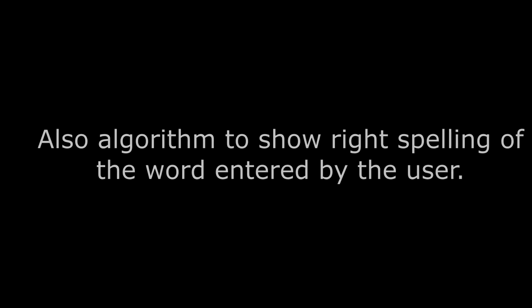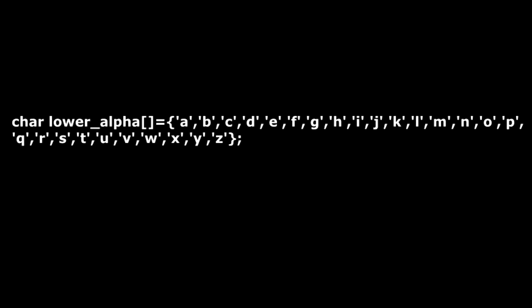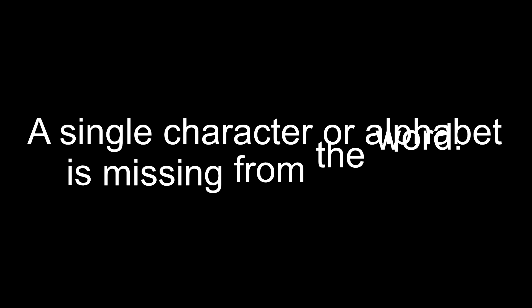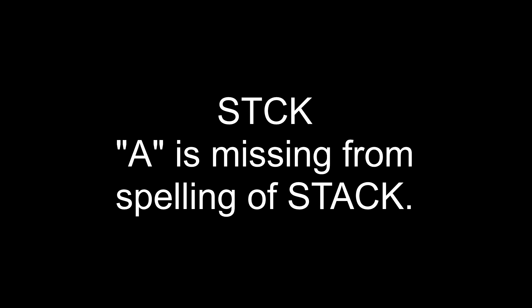Now let's see the five types of spelling mistakes possible while writing or typing, and also see the algorithm to check the right spelling. Before getting into it, first declare a global array of character type and store all the alphabets inside it — this array will be useful to find correct spellings. Type one: missing character. In this type of mistake, a single character is missing from the word. For example, if the user enters the spelling of 'stack' as 'stck', then 'a' is missing.